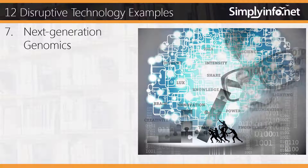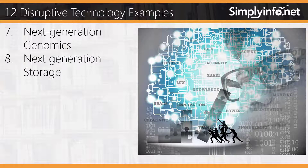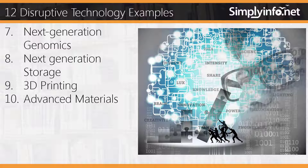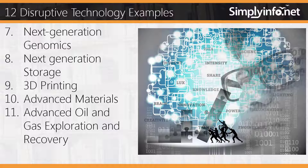Seven, next generation genomics; eight, next generation storage; nine, 3D printing; ten, advanced materials; eleven, advanced oil and gas exploration and recovery; twelve, renewable electricity.